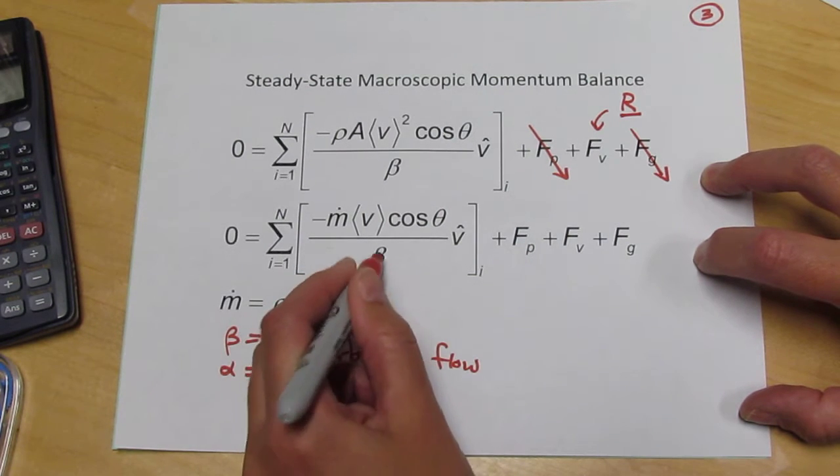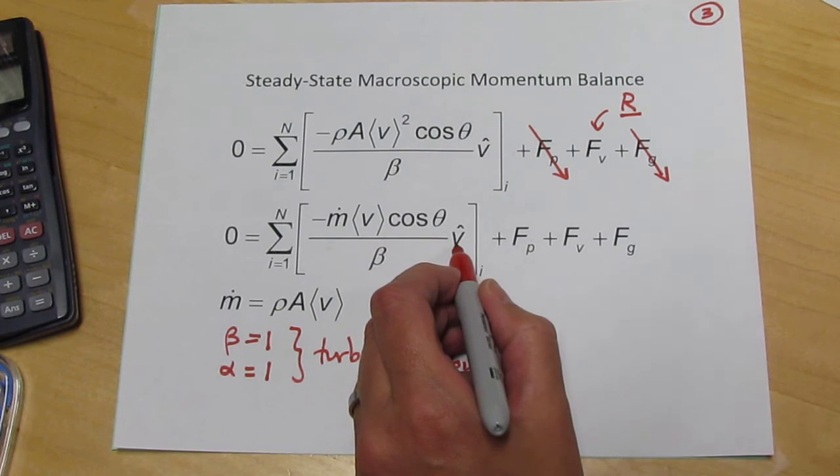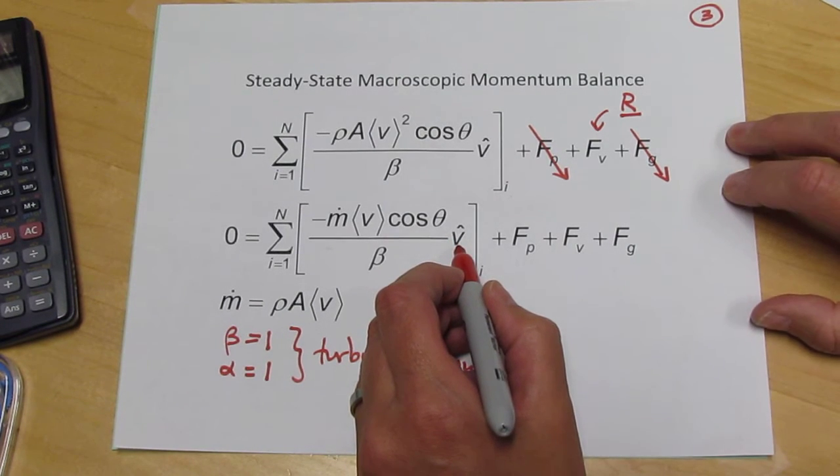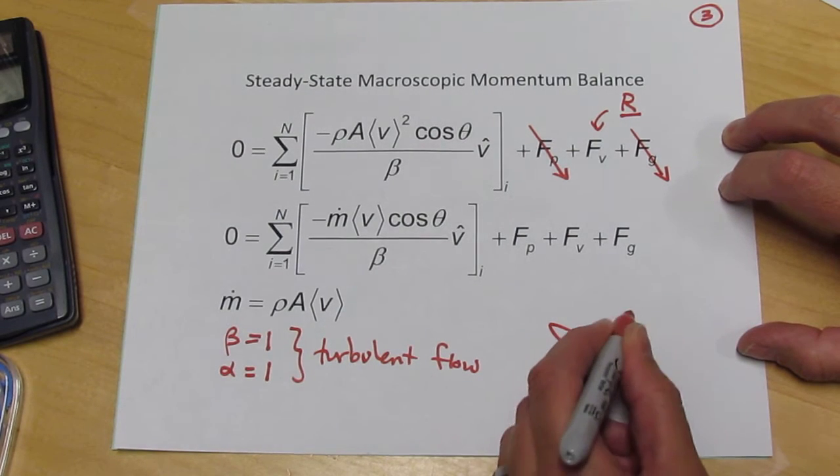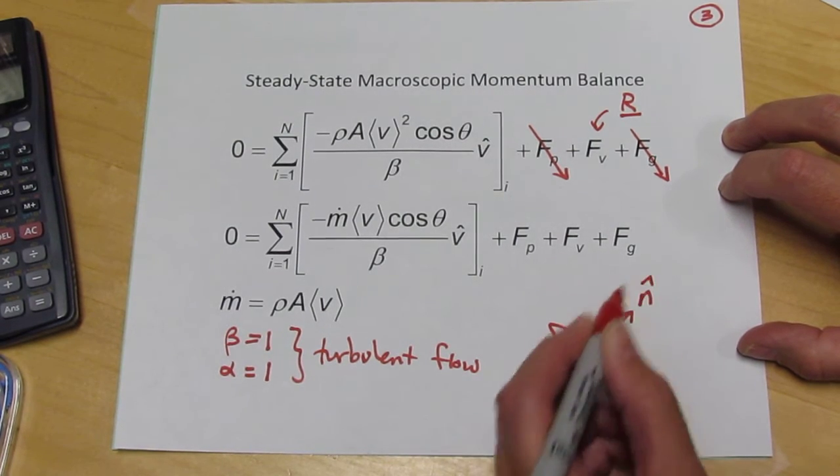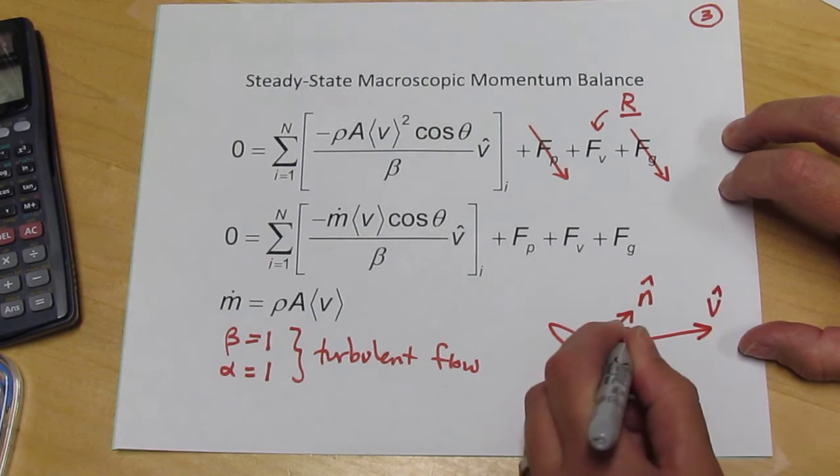So the beta is 1. This V hat is the direction of the velocity at each of the surfaces, and the cosine theta for a given surface is the angle between the outwardly pointing unit normal and the direction of the velocity. So this is the angle theta.